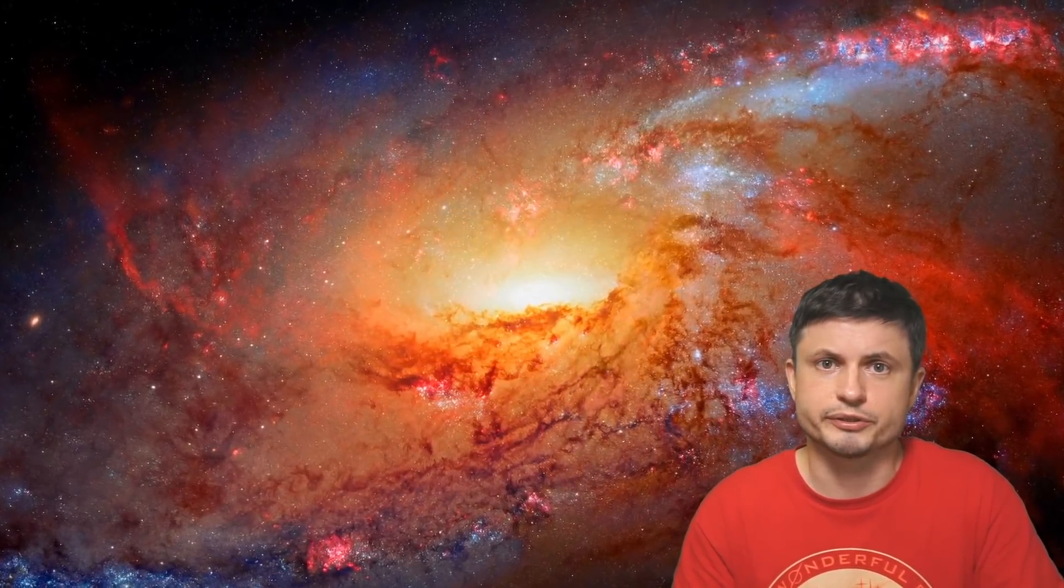More importantly, they were able to pinpoint the more accurate location of the supernova based on these early descriptions from the Chinese astronomers. And as you can see from the small map they created in their study, the actual description seems to point at the location right here. And though it does include that pulsar I mentioned before, it also includes this other region known as Parker 30 or PA 30.